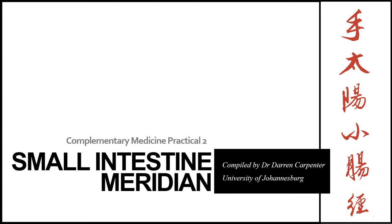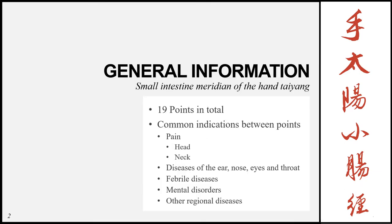Today we will be looking at the Small Intestine Meridian. The full name of this meridian is the Small Intestine Meridian of the Hand Taeyang. From the name we know it's a hand meridian, and because it's a yang meridian of the hand, we know it travels from the fingers all the way up to the head. Because it's Taeyang, it's going to travel the most posteriorly of the three hand yang meridians.